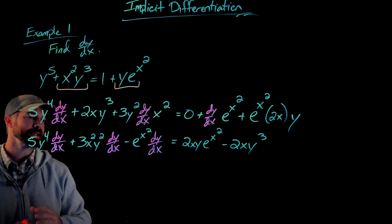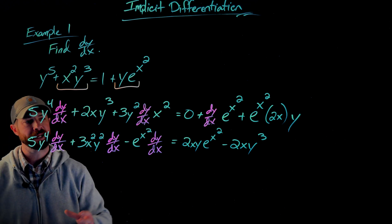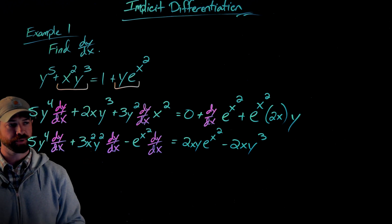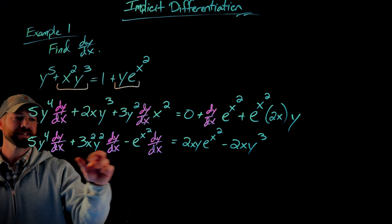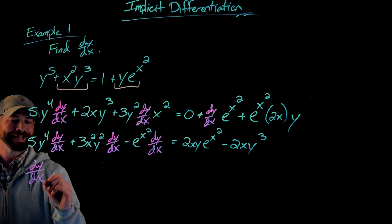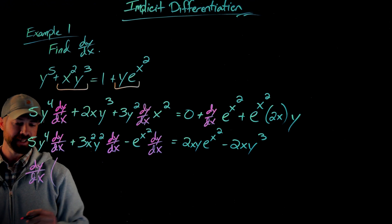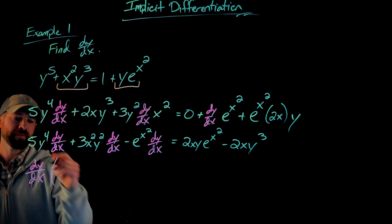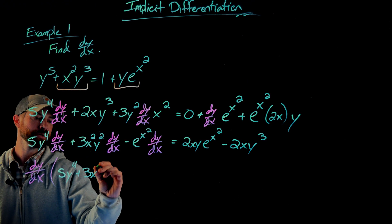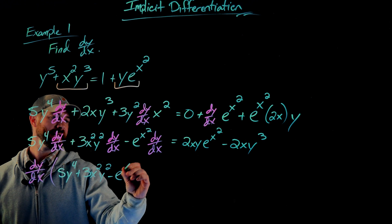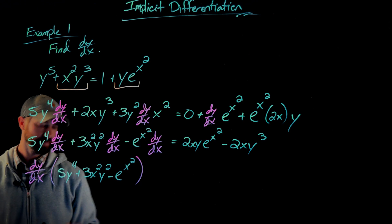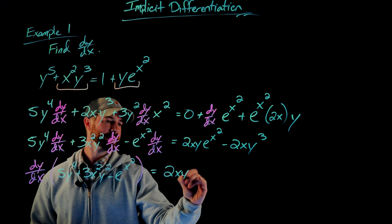Now what I'm going to do, and this is the main algebraic trick, is I'm going to factor out this factor of dy/dx from these terms right here. And so again, this is just a factor of each of these terms. When I factor that out, what I get is dy/dx times 5y to the fourth plus 3x squared y squared minus e to the x squared. And this side will stay exactly the same.